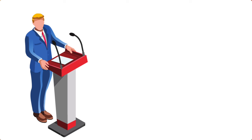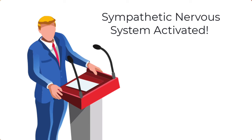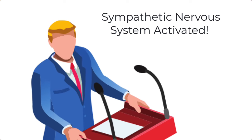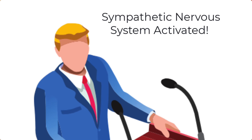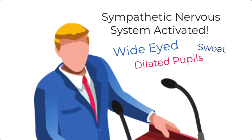I want you to imagine that Donald is giving a speech and he's terrified, because public speaking is terrifying at the best of times. So his sympathetic nervous system is activated. When that happens, we would expect sweat pouring down his face on both sides, and a wide-eyed look with dilated pupils — that is the expected facial features of an activated sympathetic nervous system.